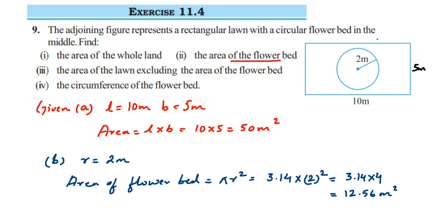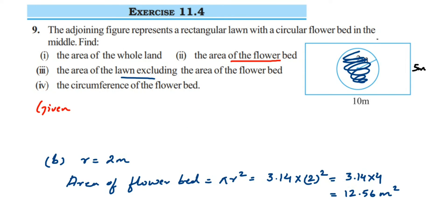For the third question, we need to find the area of the lawn excluding the flower bed — meaning we remove the flower bed area from the lawn. We already found the area of the rectangular lawn, so we just subtract the area of the flower bed from it. This is problem (c): area of the lawn excluding the flower bed.